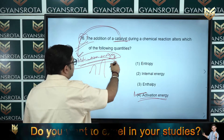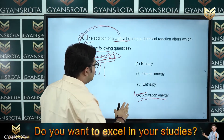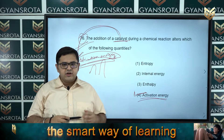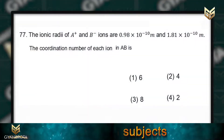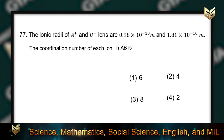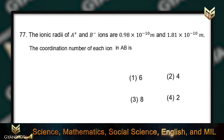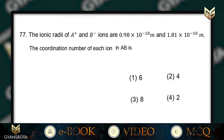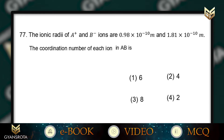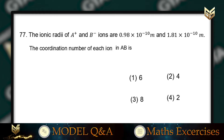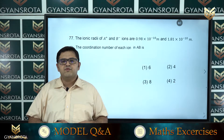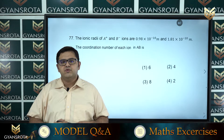This concept is given in the chemical kinetics part of your class 12 NCERT. Now moving to question number 77. The ionic radius of A⁺ and B⁻ ions are 0.98 × 10⁻¹⁰ m and 1.81 × 10⁻¹⁰ m respectively. The coordination number of each ion in AB is — this question comes from the solid state of your class 12 NCERT.